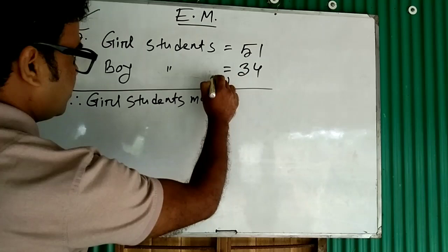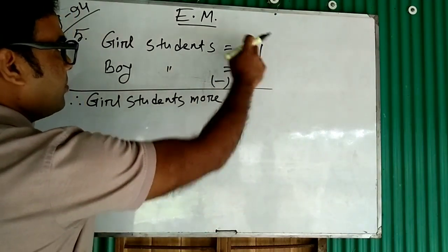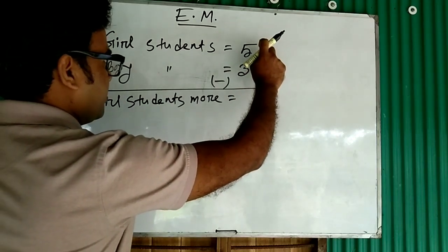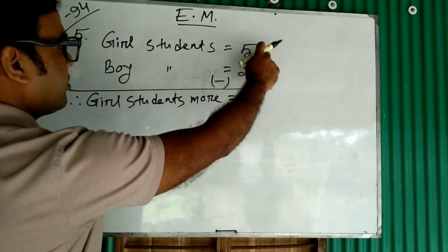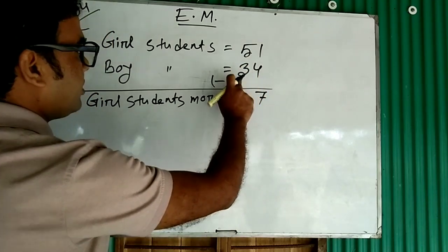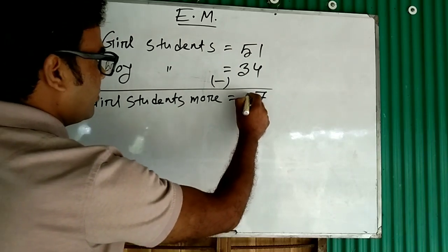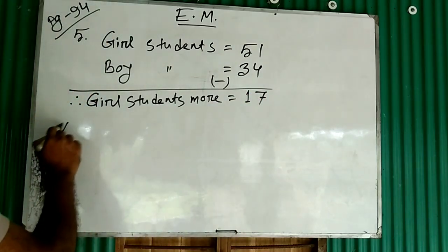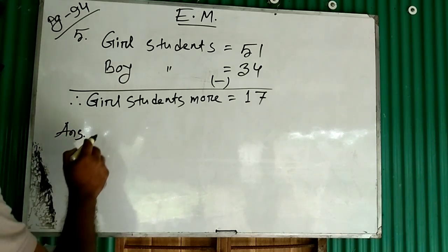Now we have subtraction, so we will give the minus sign. Subtract 34 from 51. Here ones place: borrow 1, so 11 minus 4 equals 7. Carry 1, so 3 plus 1 equals 4. Subtract 4 from 5 equals 1. Answer is 17.